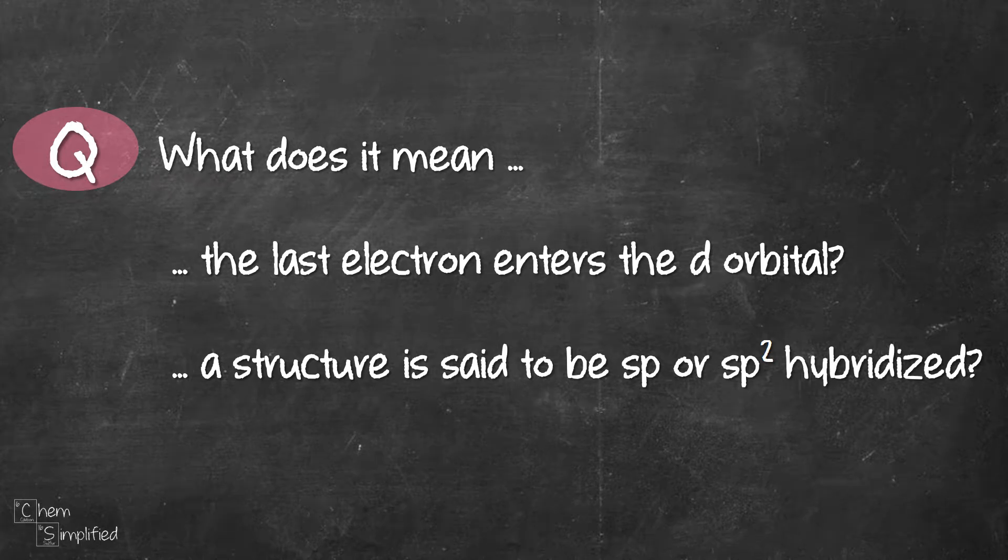I received a video request on SPDF orbitals along with these two questions. What does it mean when a statement says that the last electron enters the d orbital? And also, what does it mean when a structure is said to be sp or sp2 hybridized? I'm going to answer these two questions in this video.